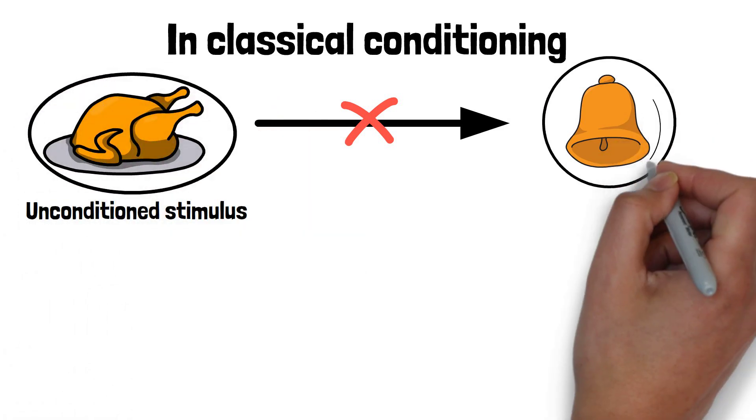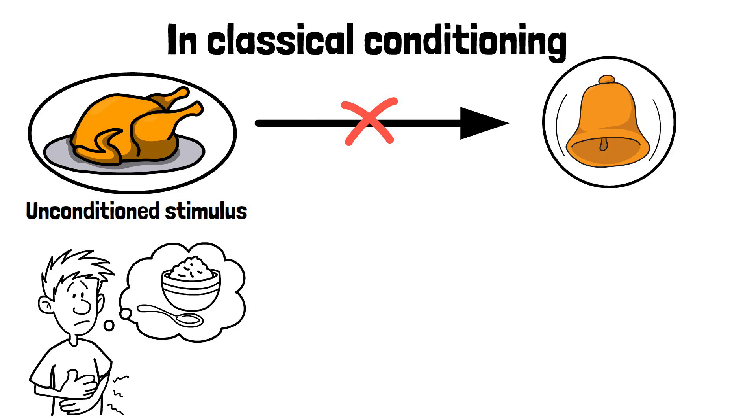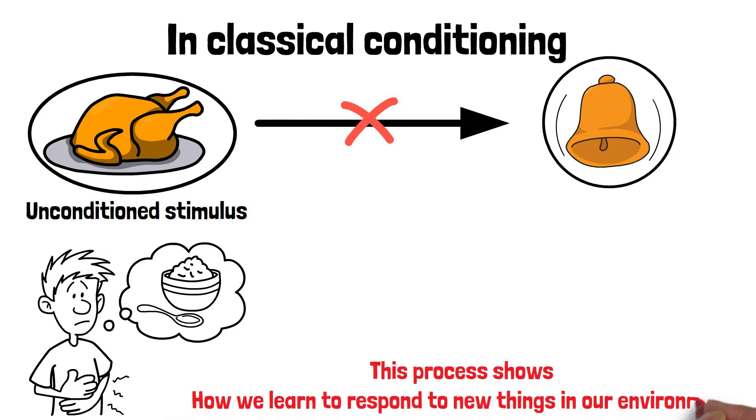For example, if you hear a bell every time you are given food, you might start to feel hungry just by hearing the bell. This process shows how we learn to respond to new things in our environment.